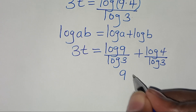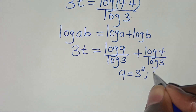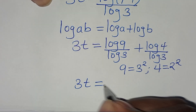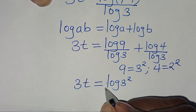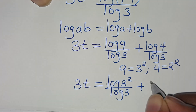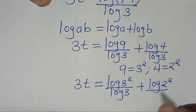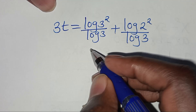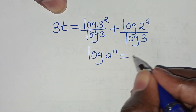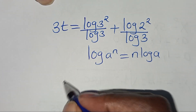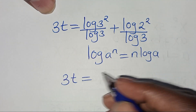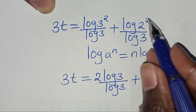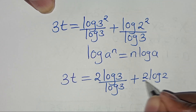The next step is we can express 9 as 3 to power 2, and we can express 4 as 2 to power 2. Therefore we have 3t equal to log 3 to power 2 divided by log 3, then plus log of 2 to power 2 divided by log 3. Applying the power rule property — that is log a to power n equals n log a — then log 3 to power 2 becomes 2 log 3, divided by log 3, then plus log 2 to power 2 becomes 2 log 2, divided by log 3.